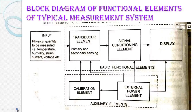Starting with the first block — the input signal from a physical parameter, such as temperature, humidity, strain, pressure, voltage, and current — these physical parameters are given to the basic functional element, which is the transducer. The transducer senses the physical parameters, converting non-electrical signals into electrical signals. It contains two types of sensing: primary sensing and secondary sensing. For example, when pressure is applied, there is displacement, and that displacement is converted into an output voltage, as in an LVDT. That is secondary sensing.